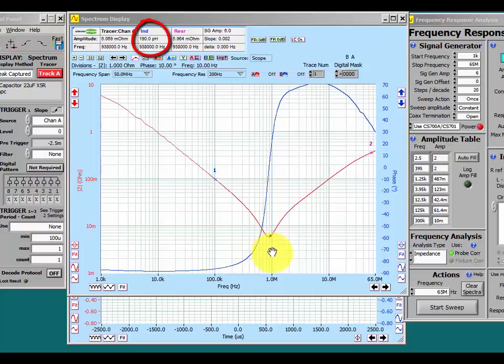You can see it just changes to picohenries there and it's now an inductor. And as we go up, we see the inductance rising until it gets around 1.5 nanohenries and it stays at that point. We can check the impedance right up to 65 MHz. And it's 1.5 nanohenries or so.